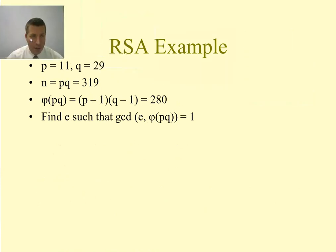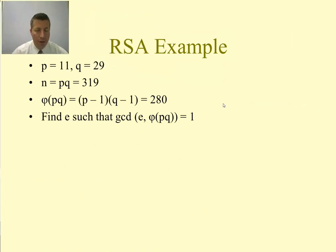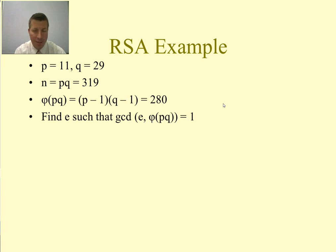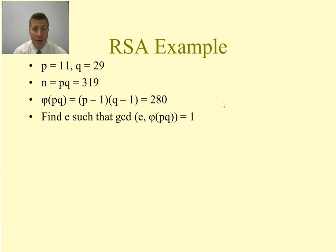Here is our RSA example. Step 1: choose p = 11 and q = 29 — both prime numbers. Step 2: n = p × q = 319. Step 3: φ(pq) = (p−1)(q−1) = 10 × 28 = 280. Step 4: find e such that GCD(e, φ(pq)) = 1. We need some value of e with no common divisors with 280 other than 1.